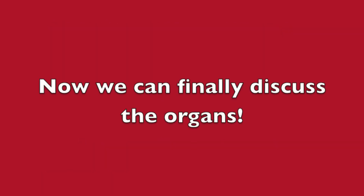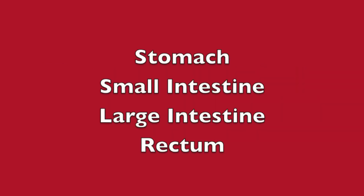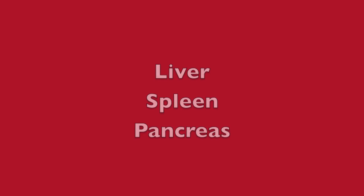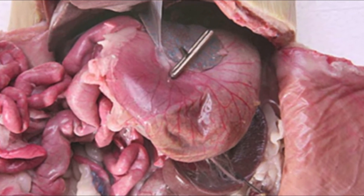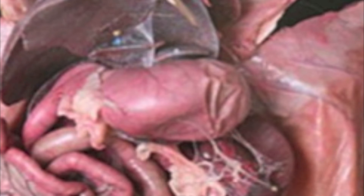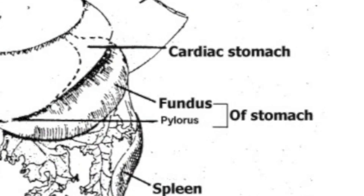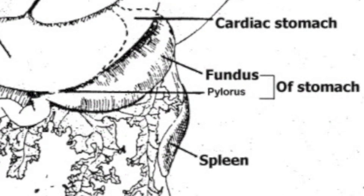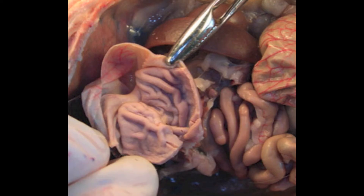Now we can discuss the organs. The organs that make up the rat's digestive system are the stomach, small intestine, large intestine, rectum, liver, spleen, and pancreas. The stomach is a sac-like storage structure for ingested foods, comprised of three areas which may look the same but differ histologically: the cardiac portion (entrance from the esophagus), the fundic portion (the large middle area), and the pyloric portion (posterior). The stomach opens to the duodenum through the pyloric sphincter. The folds inside the stomach are called rugae.